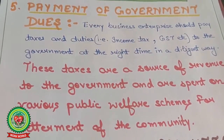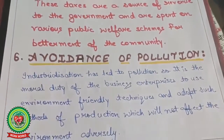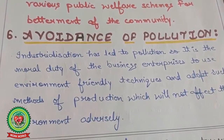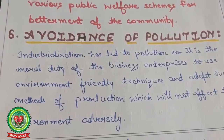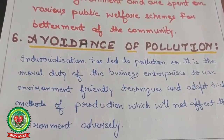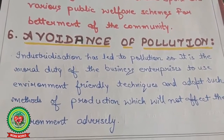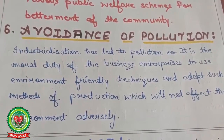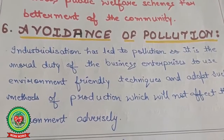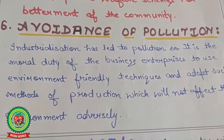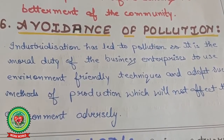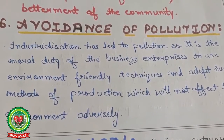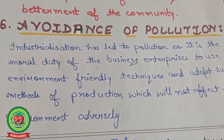The next social objective is avoidance of pollution. Industrialization has led to pollution, so it is the moral duty of the business enterprise to use environment-friendly techniques and adopt methods of production that will not adversely affect the environment. Measures required include installing low flame fixtures, purchasing energy-efficient equipment, and using electronic chimneys — all of which help create a pollution-free environment.